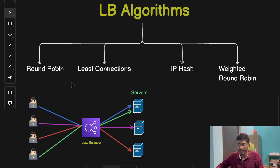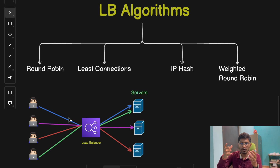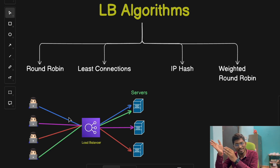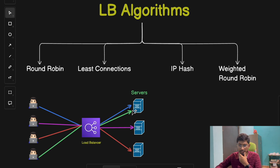The next algorithm is the least connections algorithm. This routes traffic to the server with the fewest active connections at that particular point in time. Imagine joining a checkout line at a grocery store — you'd want to join the line with the fewest people. This approach helps ensure requests go to the servers that can handle them more quickly.